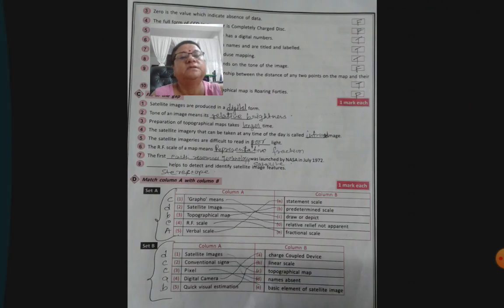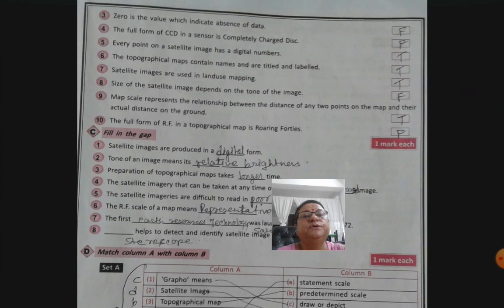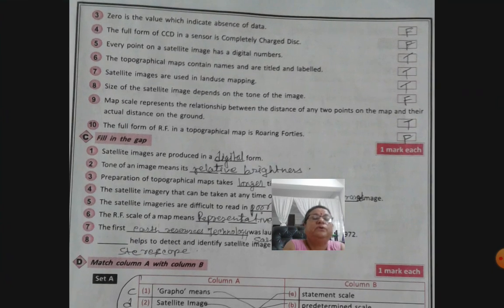Then comes the another one. The zero is the value which indicates absence of data. And the full form of CCD in a sensor, in a completely charged, this is false. Every point on a satellite image has a digital number. True.